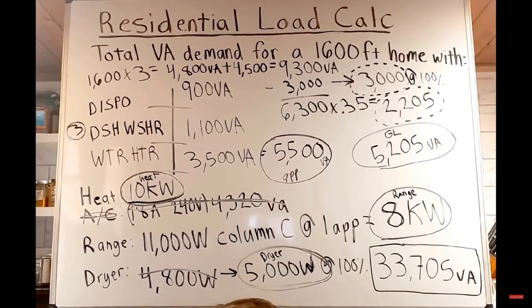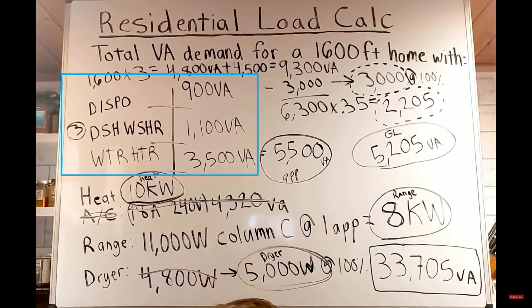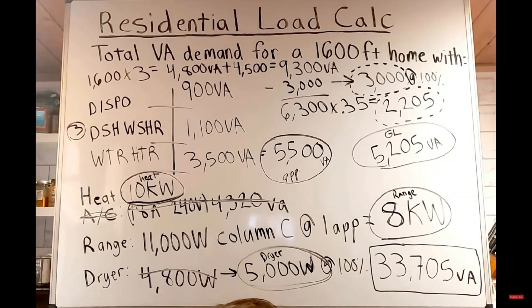Looking back at that screenshot, we can see we had three appliances of a disposal, a dishwasher, and a water heater. Since there's only three, we didn't have that demand factor in that calculation. But for this part, whether we did a demand factor or not in that part of the calculation, we're going to take the full load current of this appliance.